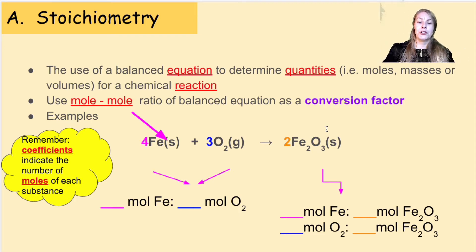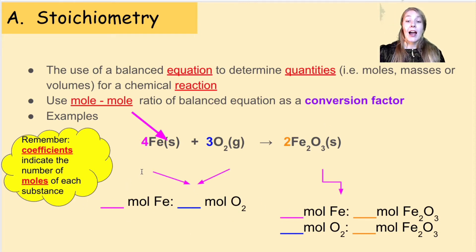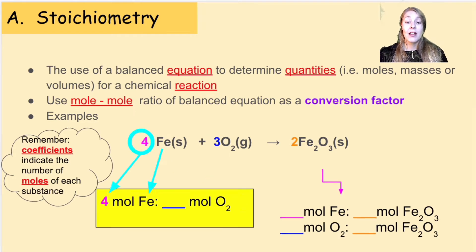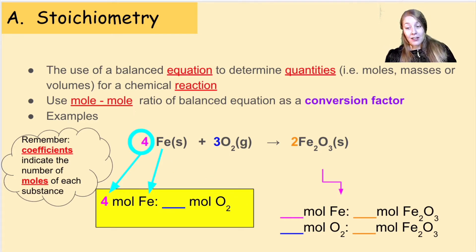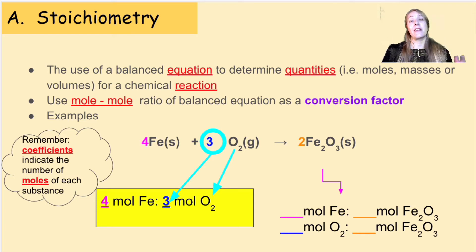Let's make sure we can figure out the ratio between two substances in moles. If we're looking at moles of Fe to moles of oxygen, I just need to look at how many moles of Fe are in this equation. There's a coefficient of four in front of Fe, so there are four moles of Fe. In front of oxygen, we see a coefficient of three, which means there are three moles of oxygen. We can set up these ratios between any two substances within a balanced chemical equation.